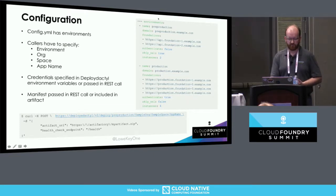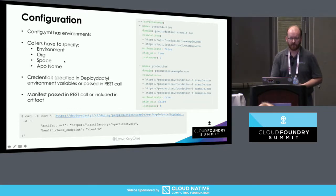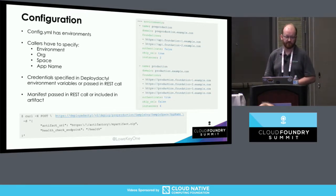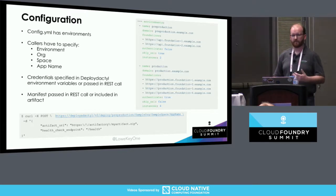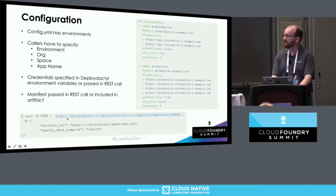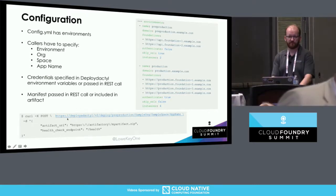We have another environment that's production with four foundations, and we want everybody to have four instances running for availability reasons - so we can enforce that in config. What that ends up looking like for your app devs is they just do that curl: they specify one of these environments, they specify the org they want to deploy to, the space, and they give it an app name. Credentials can be passed in through basic auth or configured through DeployDactyl environment variables, and the manifest is just passed with the app. You end up with just this really simple curl command that you can build into whatever pipeline you're using - your desktop, Jenkins, whatever it is.